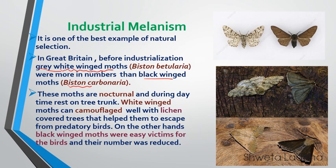After industrialization, a different story occurred. There was so much pollution with soot everywhere on the trees. In that soot, the black Biston carbonaria got camouflaged, whereas Biston betularia were easily noticed by the birds. So the population of Biston betularia after industrialization reduced, and Biston carbonaria increased. Nature is playing an important role in selection — this was about natural selection.